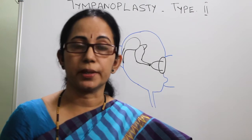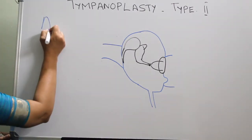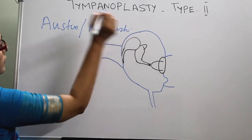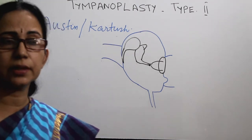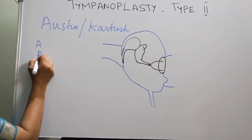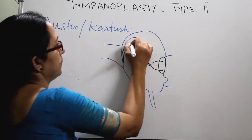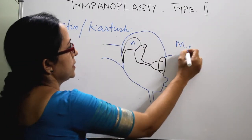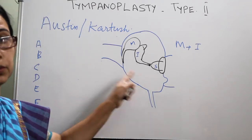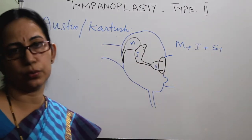To decide on the type of ossiculoplasty it is important to have a classification of the ossicular defect. Austin, along with Kartush, has given a classification on ossicular defect, dividing it into types A to F. In normal cases, malleus is present, incus is present, and stapes superstructure is also present — this is type 0, or a normal ear.